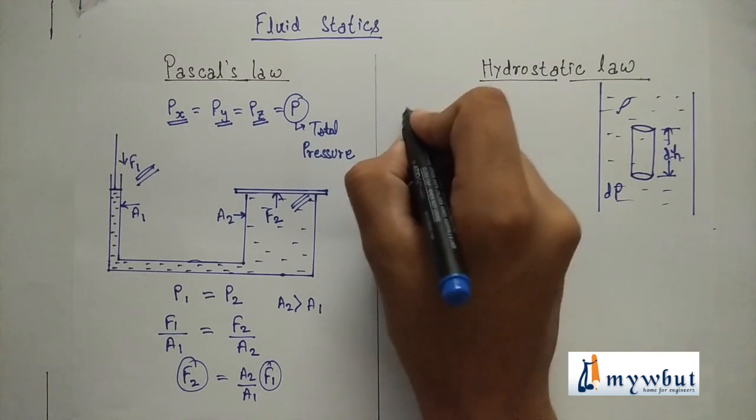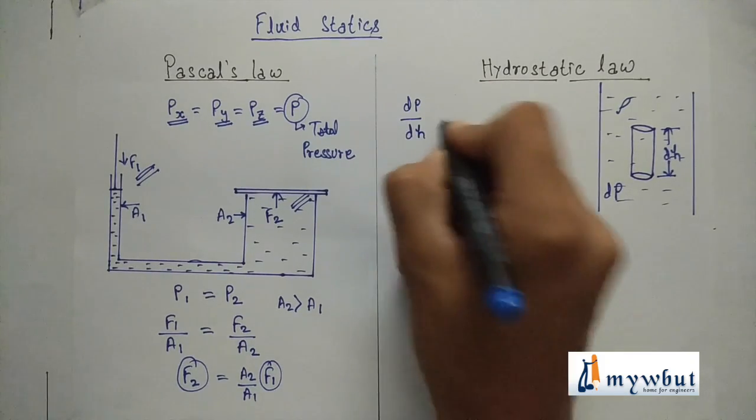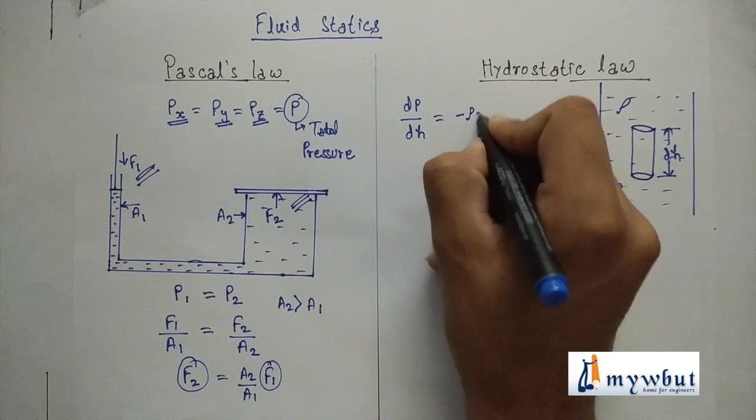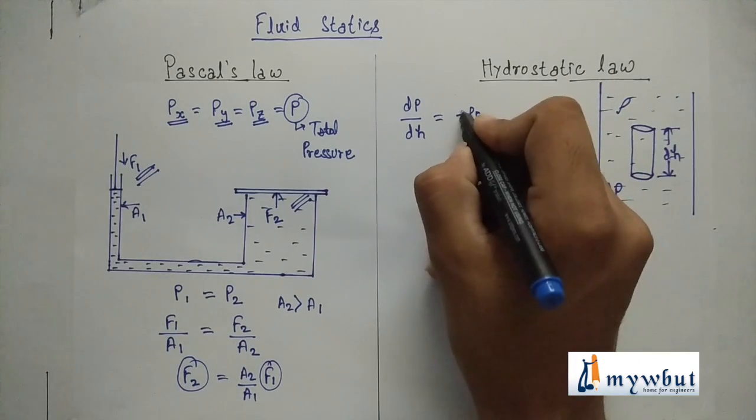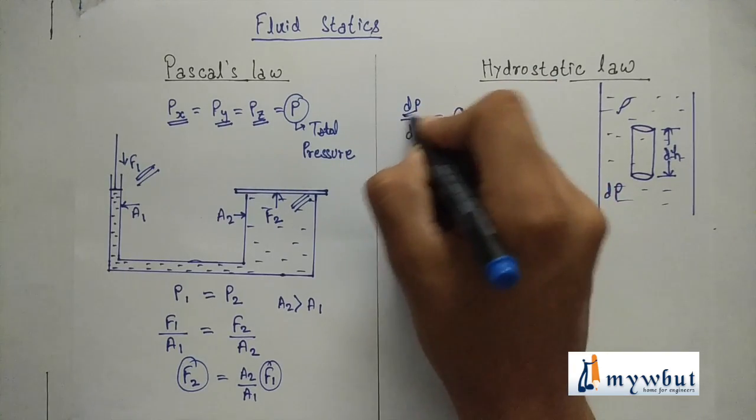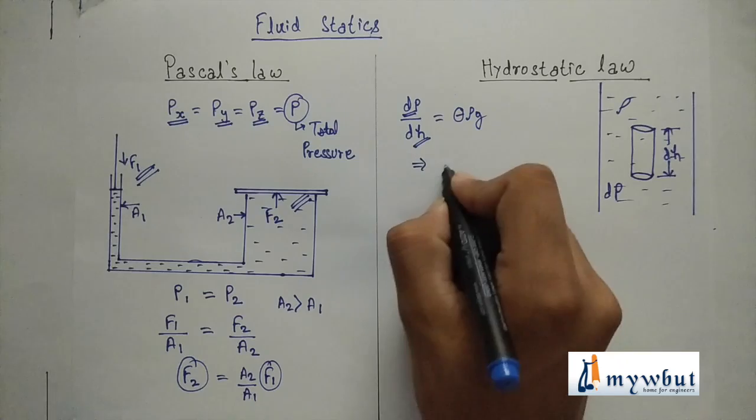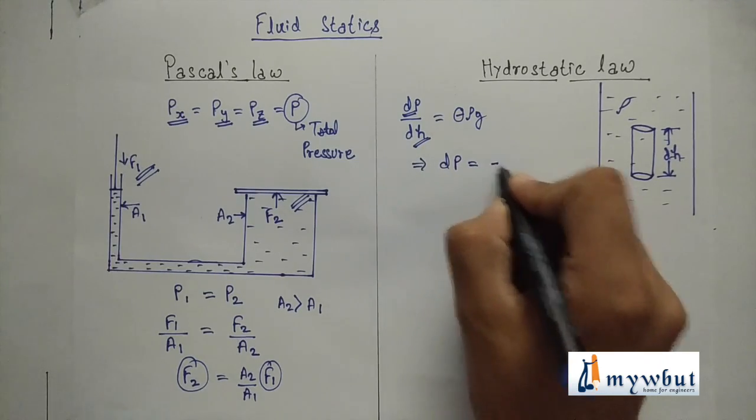then the hydrostatic law says that dp by dh is equals to minus rho g. Here the minus sign indicates as the height increases, the value of pressure decreases. Now it can be written as dp is equals to minus rho g dh.